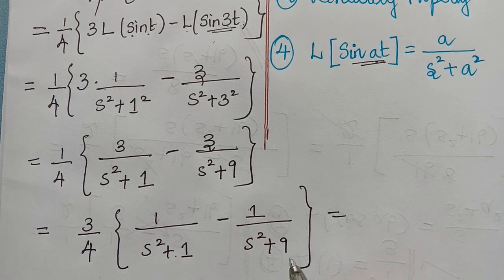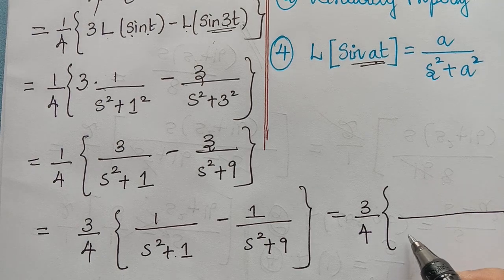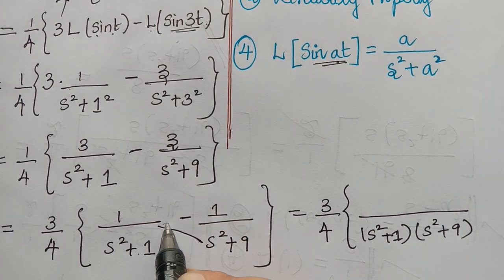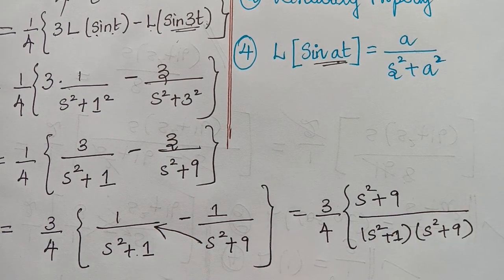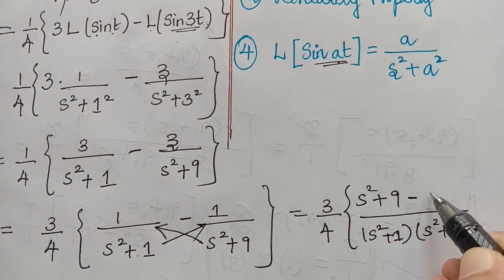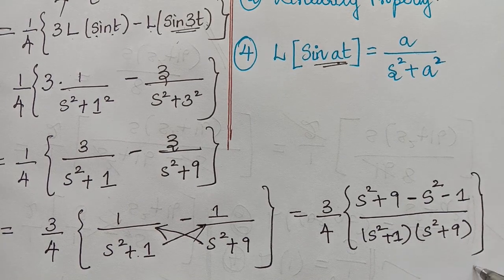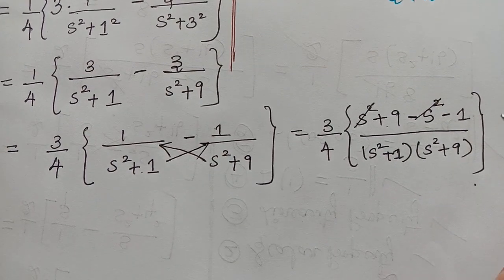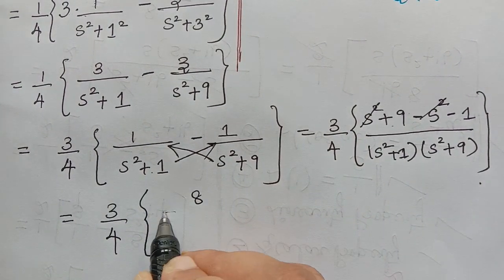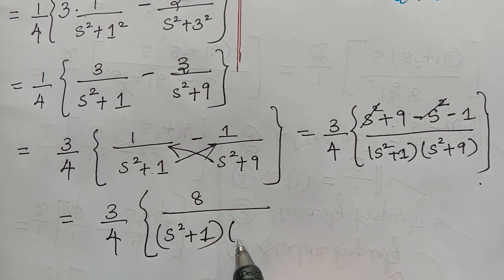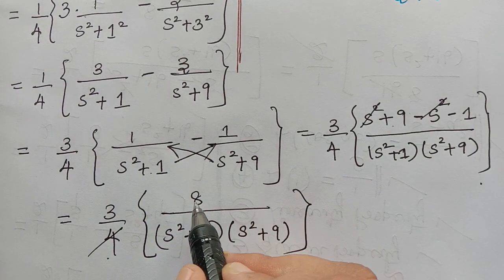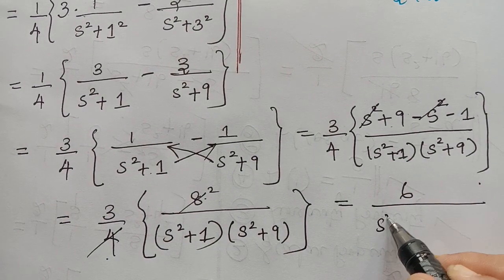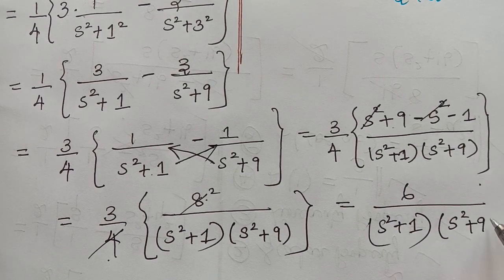Taking the LCM of (s² + 1) and (s² + 9), we get (3/4) · [(s² + 9) − (s² + 1)] / [(s² + 1)(s² + 9)]. The s² terms cancel and 9 − 1 = 8, giving (3/4) · 8 / [(s² + 1)(s² + 9)]. Simplifying 3×8/4 = 6, the final solution is 6 / [(s² + 1)(s² + 9)].